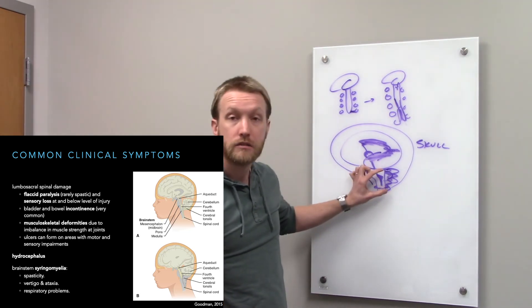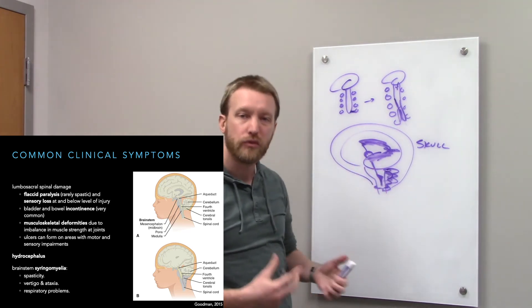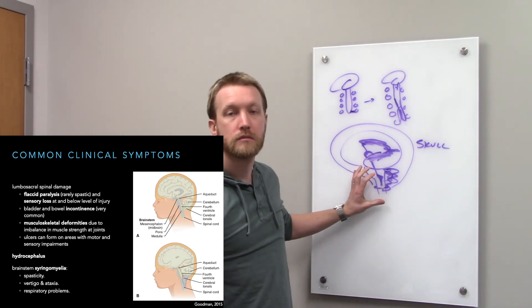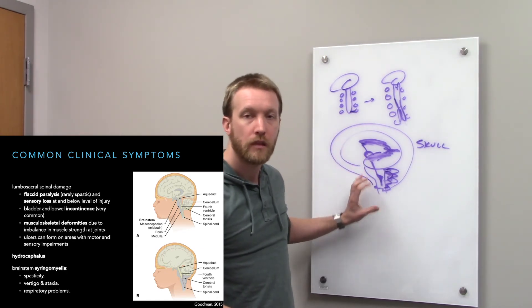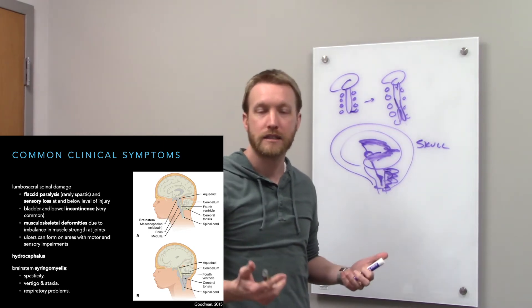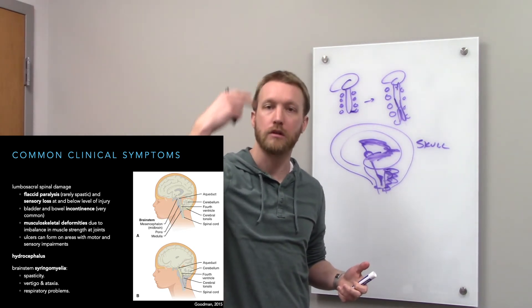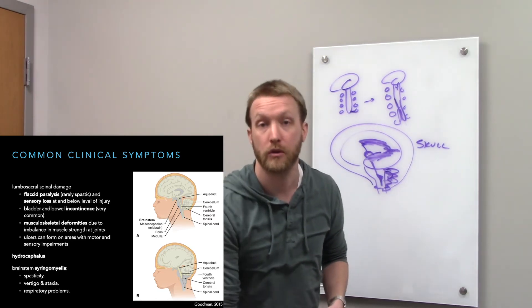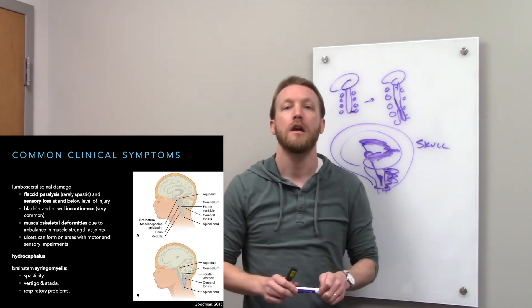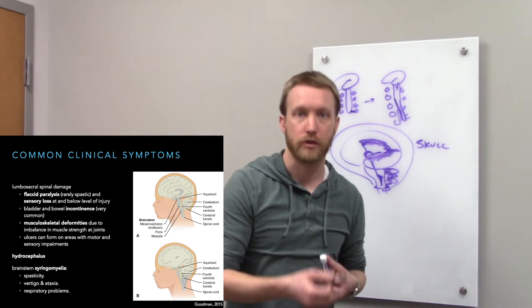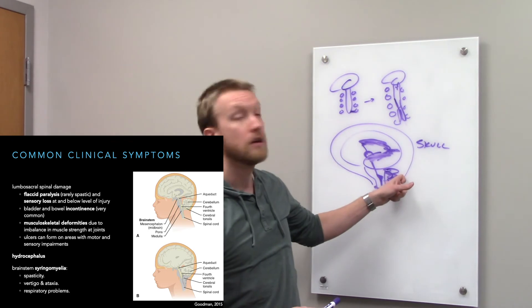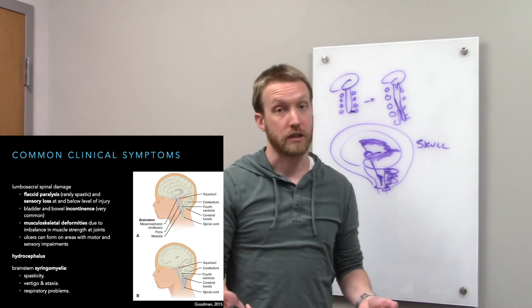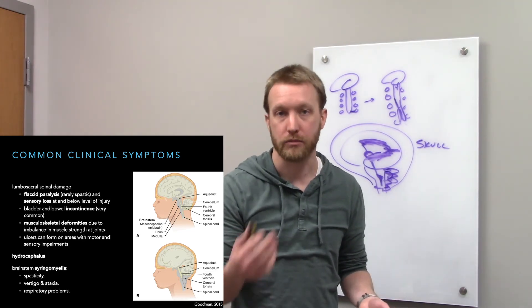This herniation of the brainstem can also create fluid-filled cysts within the brainstem. It's a condition called syringomyelia. Those fluid-filled cysts can put pressure on tracts that pass through, like the corticospinal tract can get compressed. That will create spasticity. You're damaging upper motor neurons, so you get hyperactive lower motor neurons. We can also damage brainstem structures, experience some vertigo, maybe a little ataxia if we're compressing that cerebellum. If we compress the medulla, vital function can be impaired, like respiration.